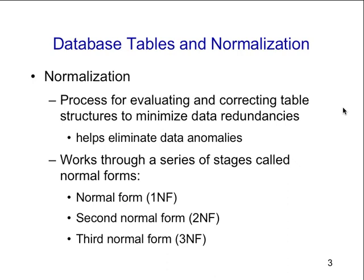Uncontrolled redundancy is not good. If you have the customer's address in five different places and the customer moves, you've got to change it in five different places — and not all five are going to match. So it helps eliminate data anomalies when you reduce that type of redundancy. Normal forms aim at reduction of uncontrolled redundancy and introducing controlled redundancy — we take some redundancy out and put some controlled redundancy back in.